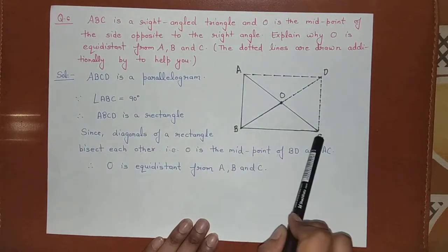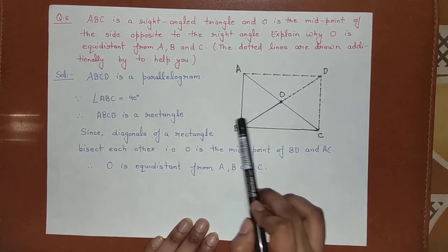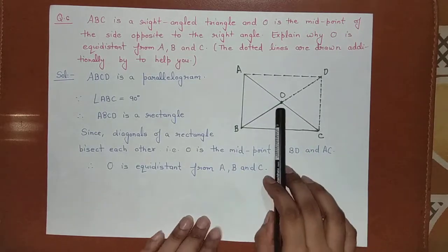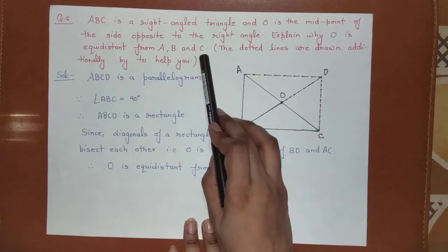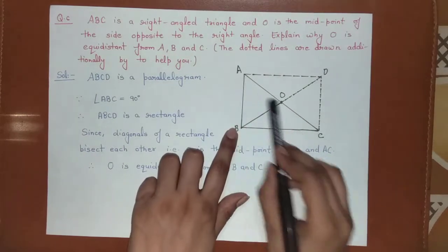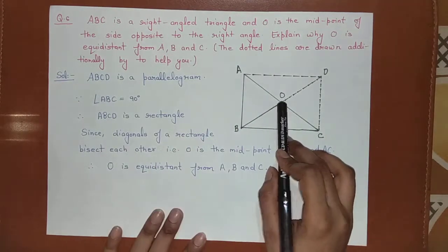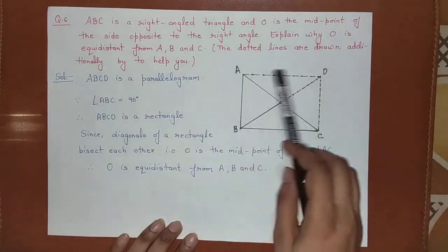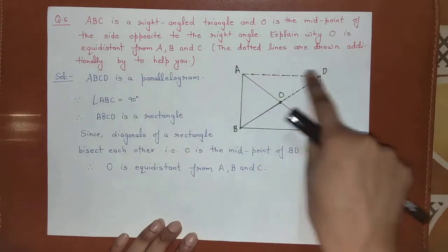This is a right angle triangle, and O is the midpoint of the side opposite to the right angle. We have to explain why O is equidistant from A, B, and C. In this figure, we have drawn dotted lines additionally to help illustrate the proof.